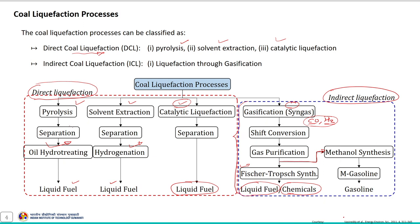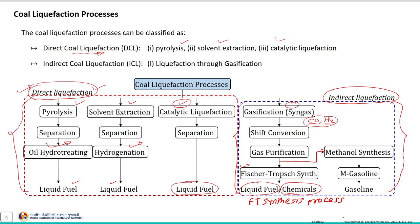In direct processes, coal is directly converted into liquid fuel using thermochemical conversion — that is why they are termed direct coal liquefaction processes. Fischer-Tropsch synthesis was discussed in detail in module 4, so we will focus here on the direct coal liquefaction processes.